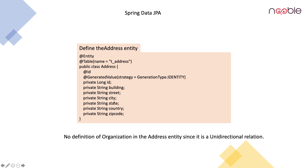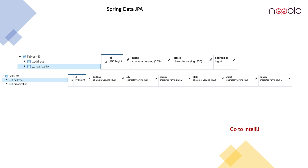Here we have seen the address entity in IntelliJ. What we have to note is we are not having any definition of organization in the address entity — hence we are calling it a unidirectional relation. Now let us see how the tables are created. The organization table is created with address ID as a foreign key, and the address table has nothing to refer to the organization table.